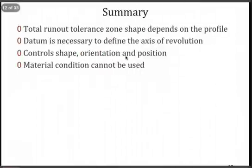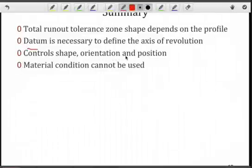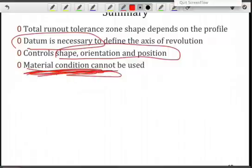So in summary, total runout will depend upon the profile that we have for the axial feature. The datum is necessary, again, because you're defining a relationship between that tolerance zone for the feature and some other features on the part. We're simultaneously controlling shape, orientation, and position. And don't forget, material condition cannot be used. Thank you.